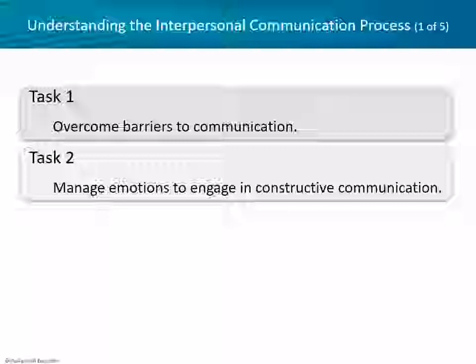Moving on, we have two tasks. Task one is to overcome the barriers to communication. Task two is to manage emotions to engage in constructive communication — because nothing can derail communication faster than improper emotional management. The goal is not to think of emotions as necessarily bad, but to manage them effectively rather than being managed by them.